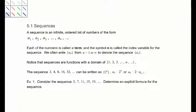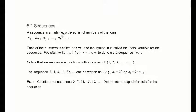A sequence is an infinite ordered list of numbers of the form a sub 1, a sub 2, a sub 3, 4, 5, 6, all the way up to n, and just continuing on. Each of these numbers is called a term, and the symbol n is used as the index variable for the sequence. We often write in curly braces a sub n from n equals 1 to infinity to denote that sequence.